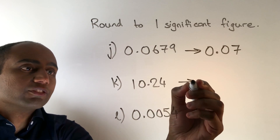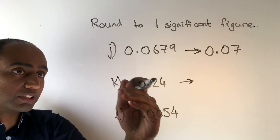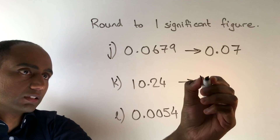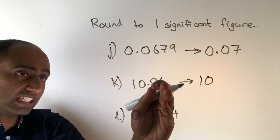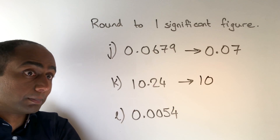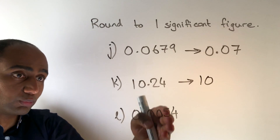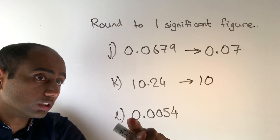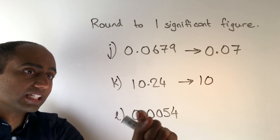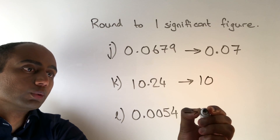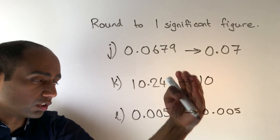In K we have the tens column as our biggest place value column, so we're going to round this to the nearest ten, and that is simply ten. In L we have got the thousandths column as our biggest place value column — remember the units, tenths, and hundredths are all empty — so we're going to round to the nearest thousandth, or to three decimal places. To three decimal places this is 0.005; the next digit along was only a four so we round it down.